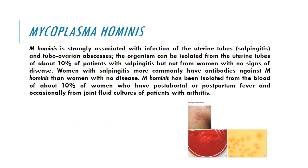Mycoplasma hominis is strongly associated with infection of the uterine tubes — salpingitis — and tubo-ovarian abscesses. The organism can be isolated from the uterine tubes of about 10% of patients with salpingitis, but not from women with no signs of disease. Women with salpingitis more commonly have antibodies against Mycoplasma hominis than women with no disease. Mycoplasma hominis has been isolated from the blood of about 10% of women who have postpartum fever, and occasionally from joint fluid cultures of patients with arthritis.